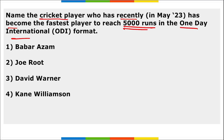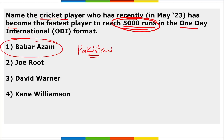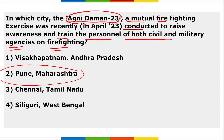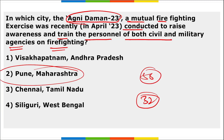Babar Azam, the Pakistani skipper, became the fastest player to reach 5,000 runs in One Day Internationals. The Agni Daman 23 mutual firefighting exercise was recently conducted in Pune, Maharashtra, to raise awareness and train personnel of both civil and military agencies. A total of 56 firefighting columns participated, including 32 from civil agencies.